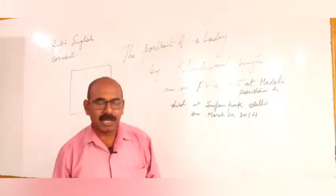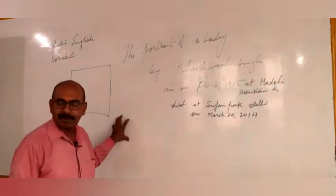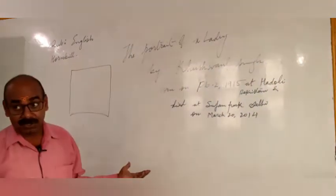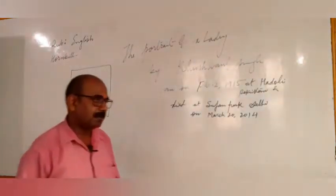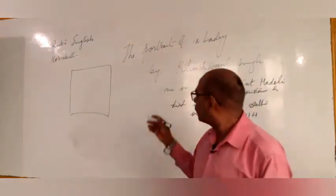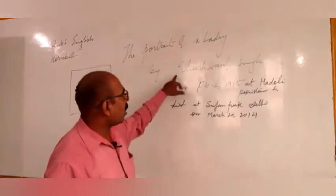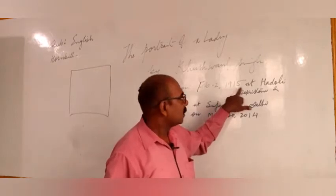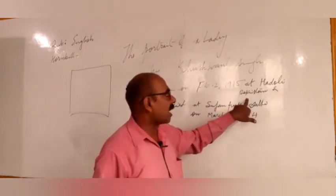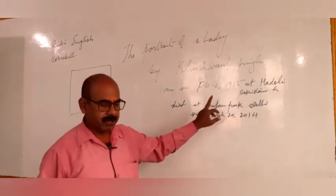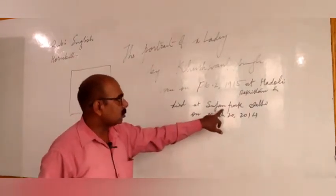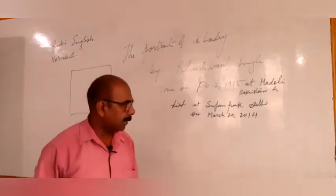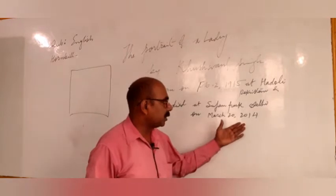And generally the little child, whenever seeing the portrait, might raise the question: who is this person? Now, Khushwant Singh — as you know — was born on February 2nd, 1915, at Hadali, Pakistan, before the partition. And he died in Sujan Singh Park, Delhi, on March 20, 2014. Recently he passed away.